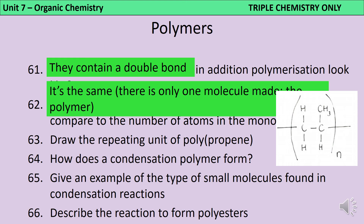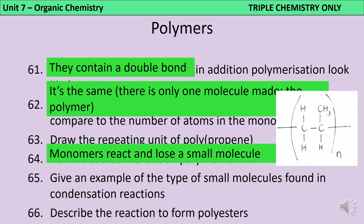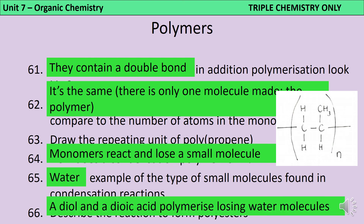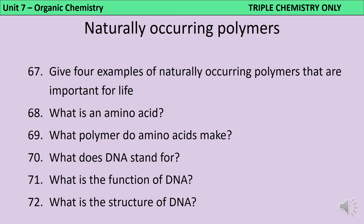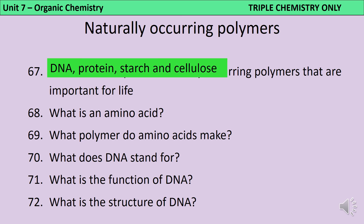A condensation polymer forms in a reaction that results in the loss of a small molecule, often but not always water. Polyesters are formed when a diol — an alcohol with two alcohol groups, one on each end — reacts with a dioic acid — a carboxylic acid with a carboxylic acid group on each end — and each time the carboxylic acid and alcohol join together a water molecule is lost. The four naturally occurring polymers in the GCSE chemistry specification are DNA, protein, starch and cellulose. Glycogen is in the biology specification but not specifically in chemistry.